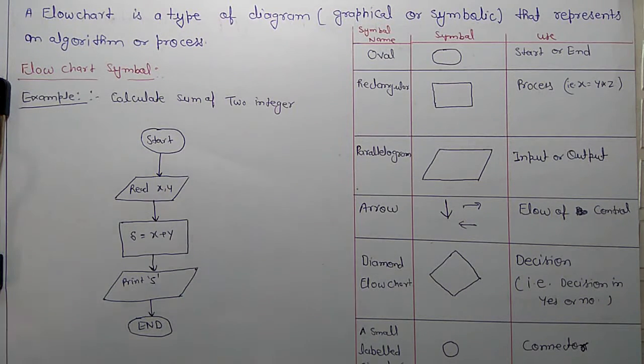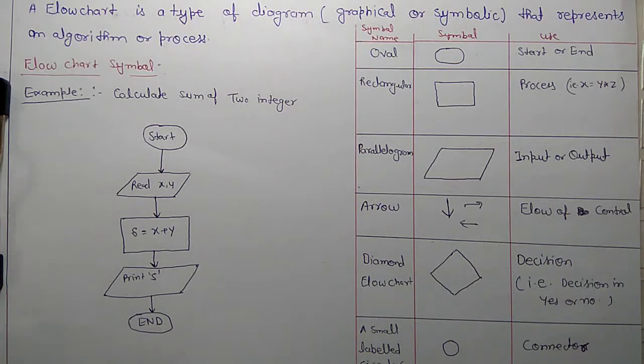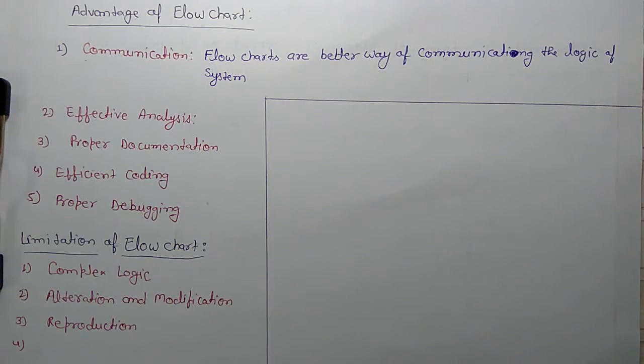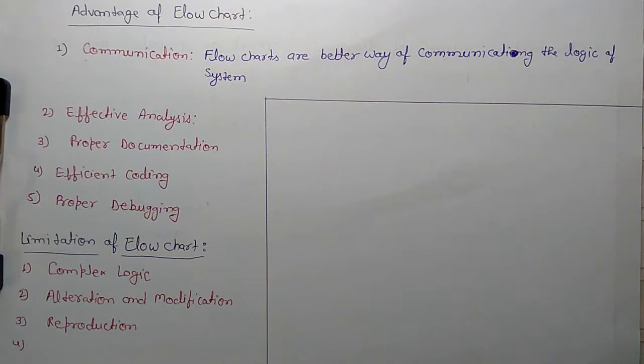Let's take some advantages and limitations of flowchart. Advantage of flowchart: first is communication. Flowcharts are better way of communicating the logic of system. If you have some system and you want to describe to some other person, then you use flowchart. That is better way.